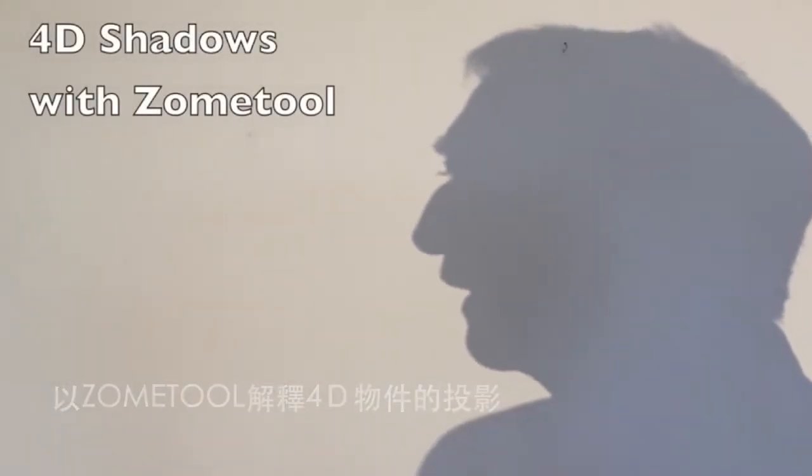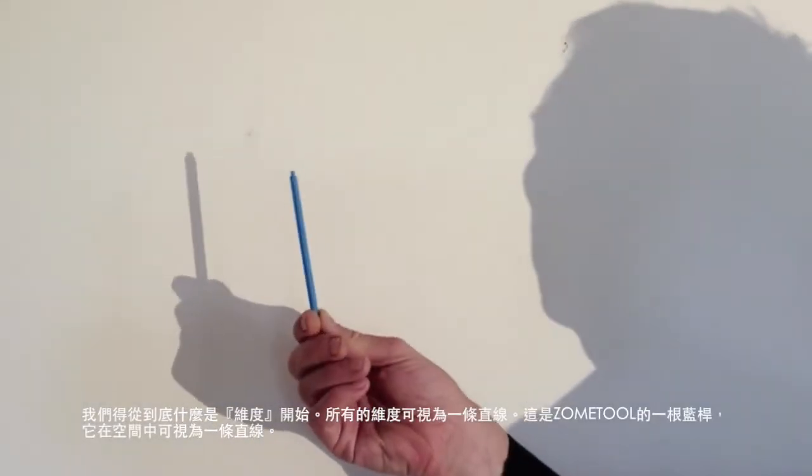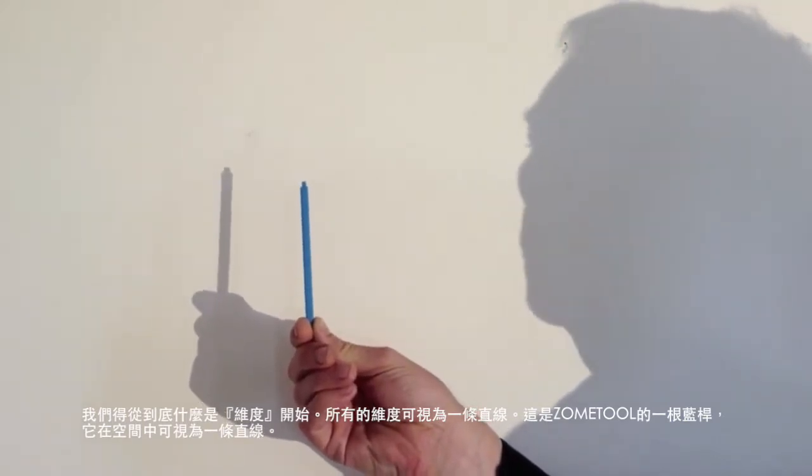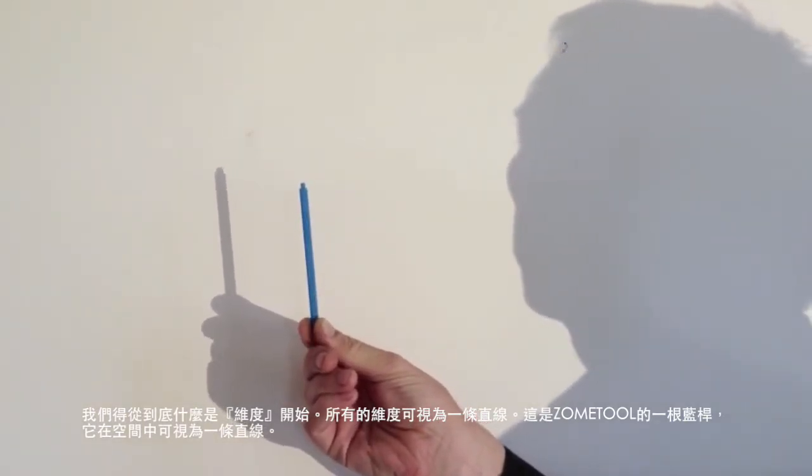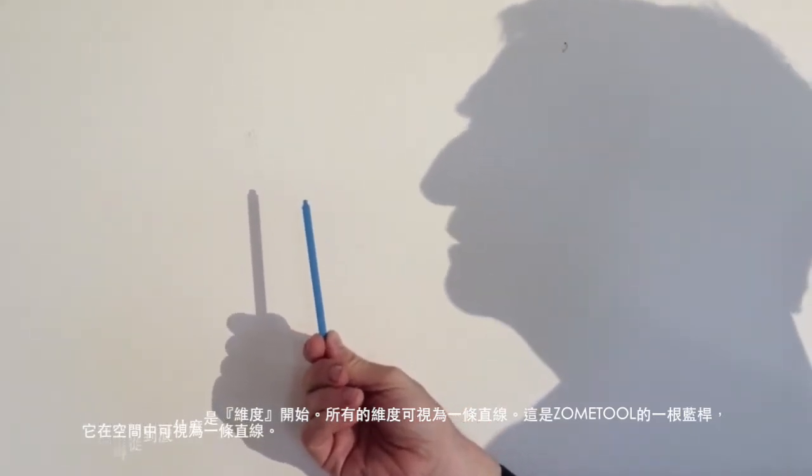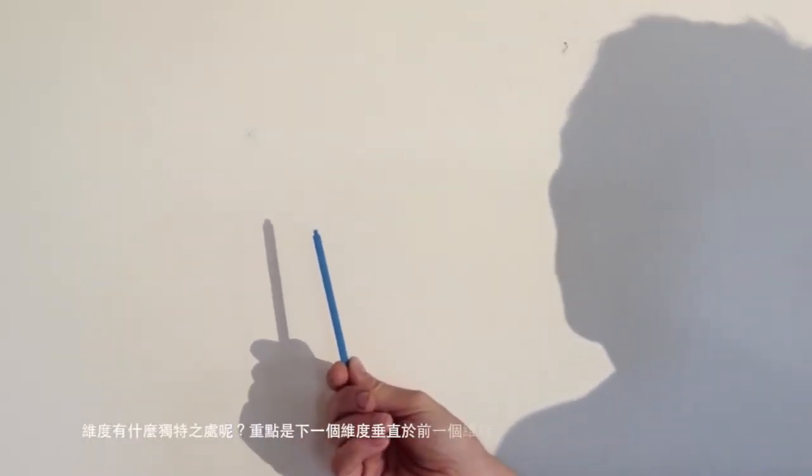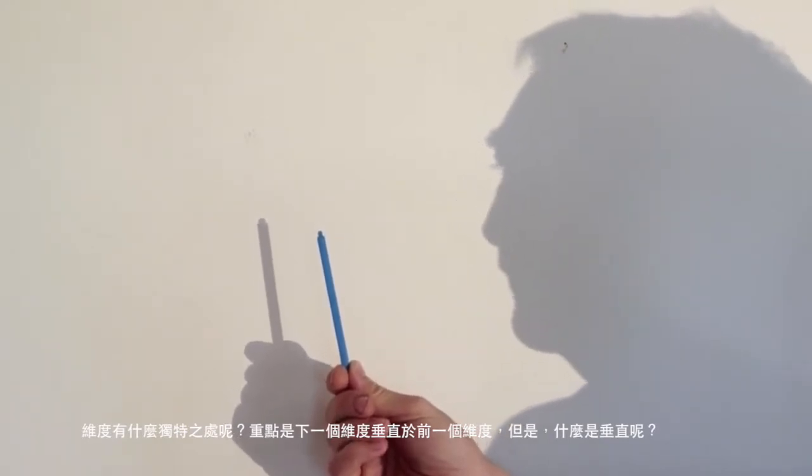I'm Paul Hildebrandt's Shadow, and I'm going to talk about going from zero to four dimensions using ZoneTool and shadows. You have to start with understanding what a dimension is. And really all a dimension is, is a line. This is a ZoneTool blue line, at least this object, this strut, represents a line in space, and the only thing that makes a dimension special is that it's perpendicular to all the other dimensions.